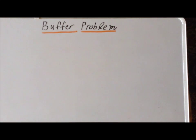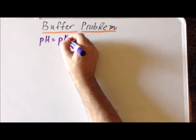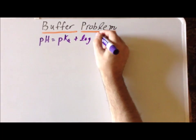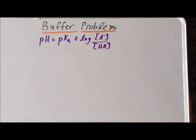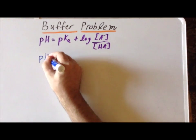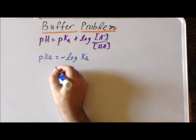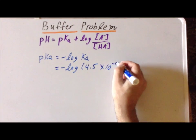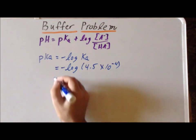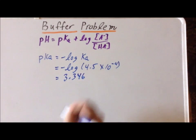Next, we need to employ the Henderson-Hasselbalch equation, which tells us that for a buffer solution, the pH equals the pKa of the acid plus the log of the concentration of the conjugate base divided by the concentration of the undissociated acid. In this case the acid is nitrous acid, so we calculate the pKa, which is the negative log of Ka = 4.5 × 10⁻⁴. Solving, we get pKa = 3.346 for nitrous acid.